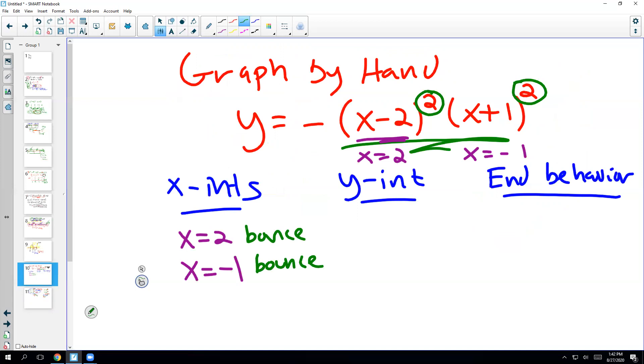Okay, the y-intercept. The y-intercept is always nice and easy, actually. First of all, it always crosses. You don't have to worry about a bouncing y-intercept. It's always a cross. And you can find it if you just plug in x equals 0. If you plug in x equals 0, that's going to be the y-axis.